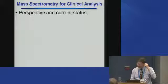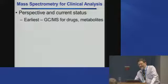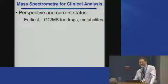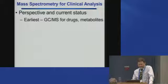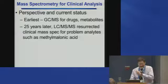I spent a fall semester on sabbatical at ARUP and the University of Utah, hence that connection. I'll give you some perspective as I see it — feel free to argue if you disagree. The earliest clinical analyses done by mass spectrometry were GC-MS for drugs and metabolites, largely toxicology related, an obvious application that was hard or impossible to do by other methods. That was 25 years ago. Then LC-MS/MS really resurrected clinical mass spectrometry.